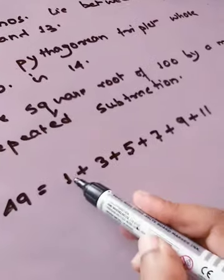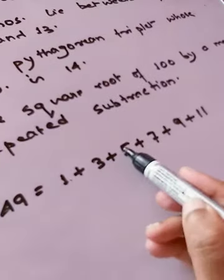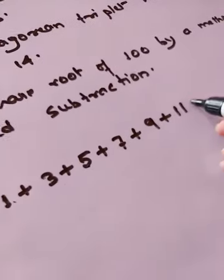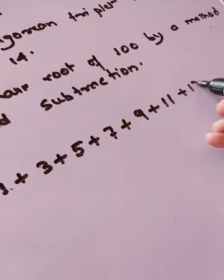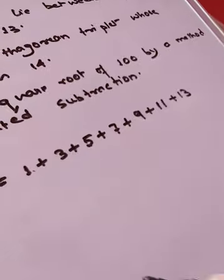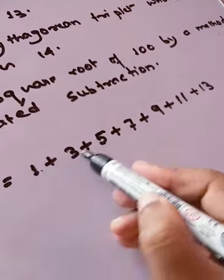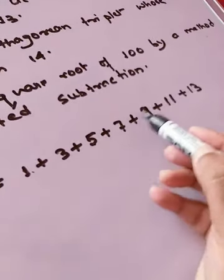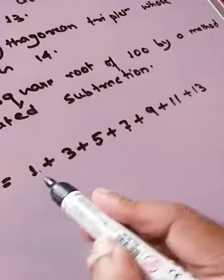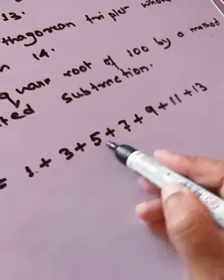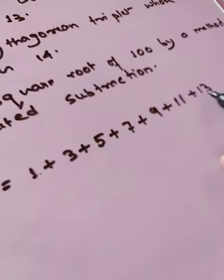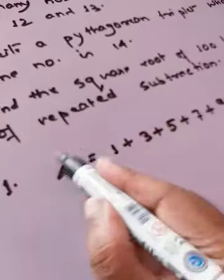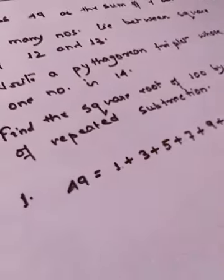So altogether, how many odd numbers are there? 1, 2, 3, 4, 5, 6, 7. So if you add up all 7 consecutive odd numbers — 1, 3, 5, 7, 9, 11, and 13 — you will get the answer 49.